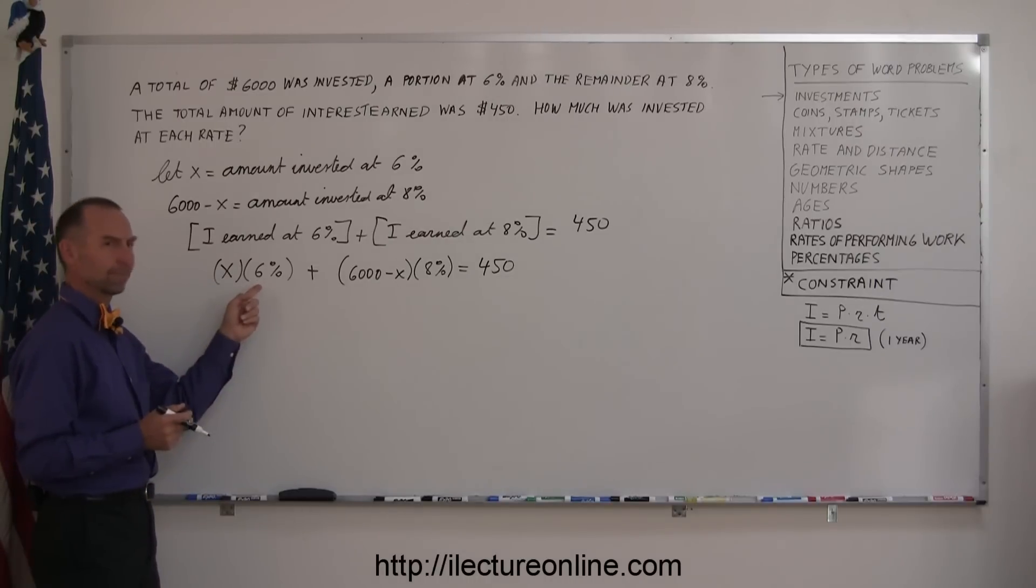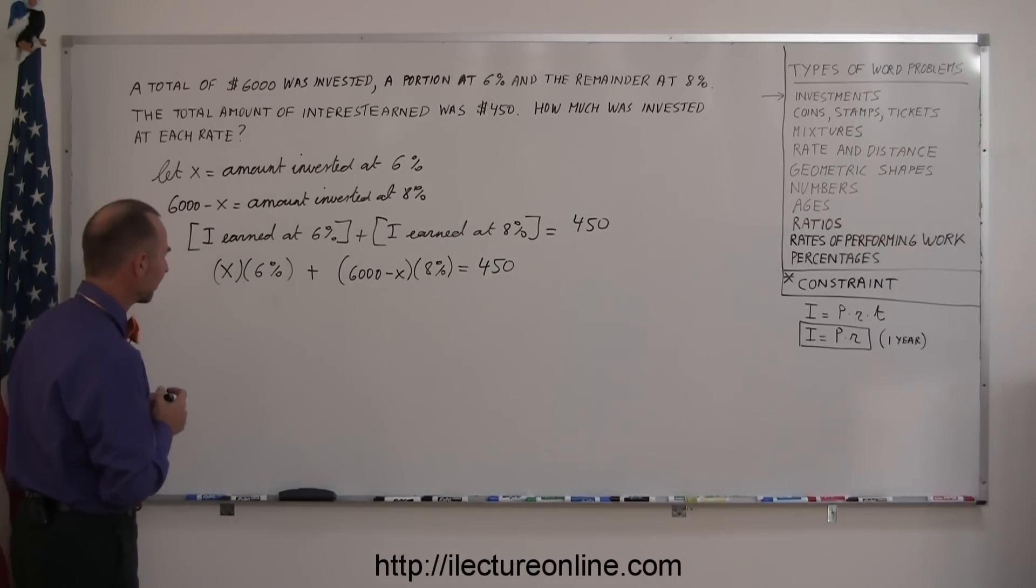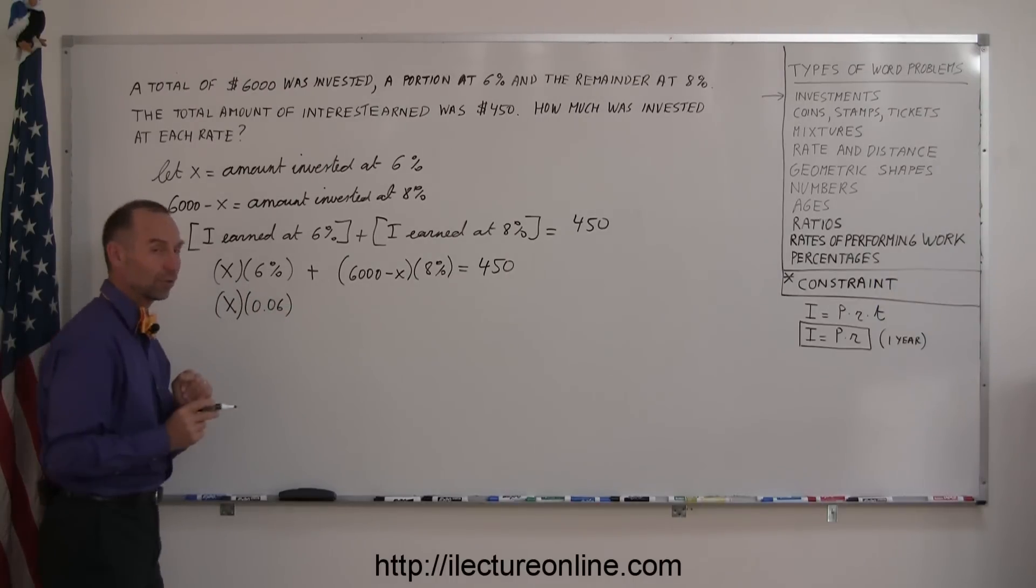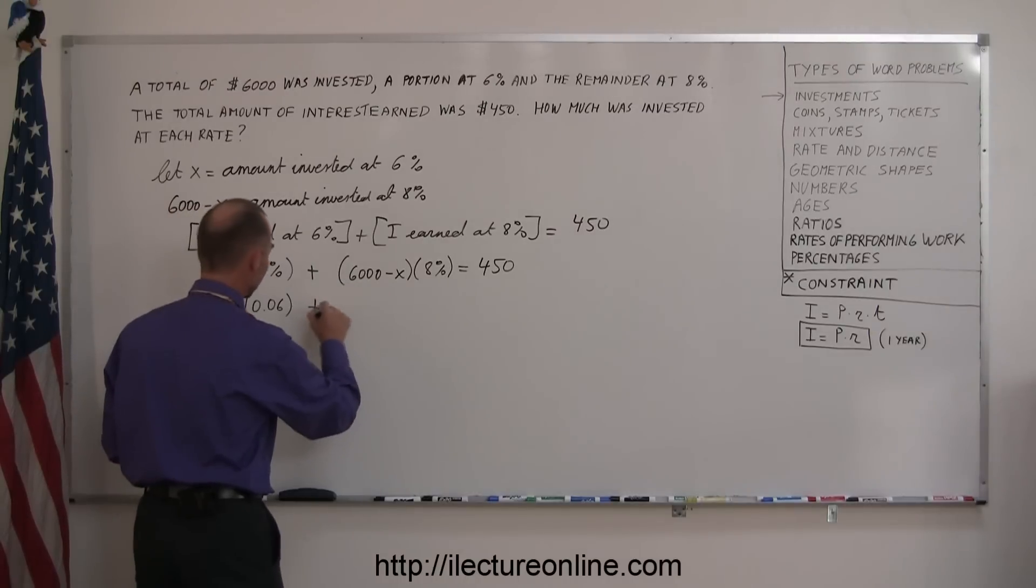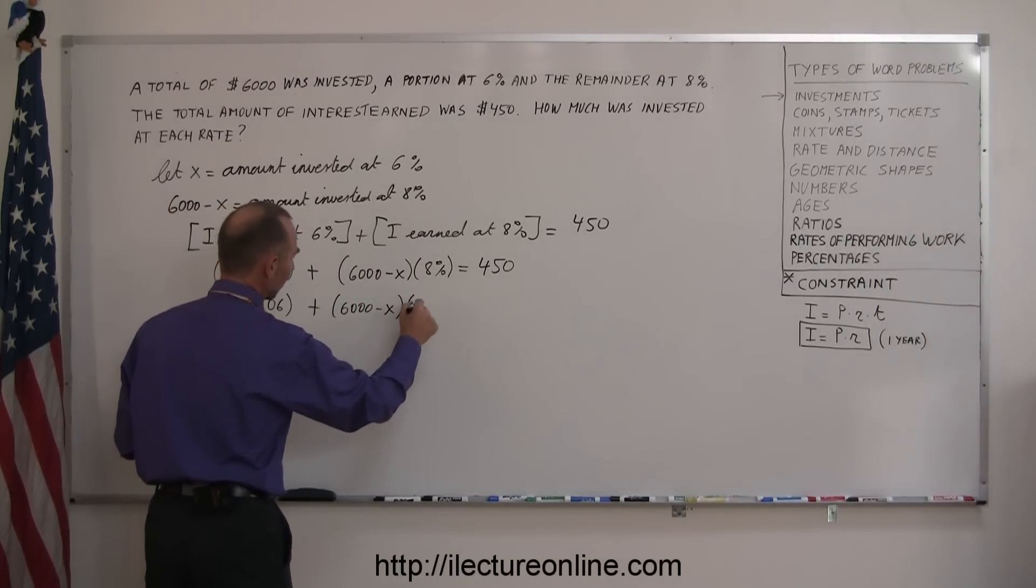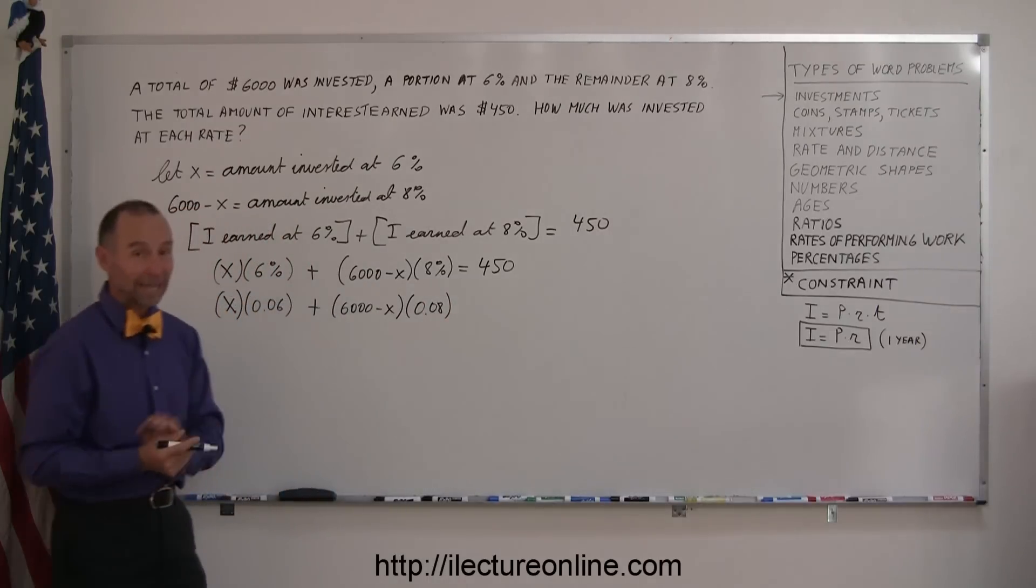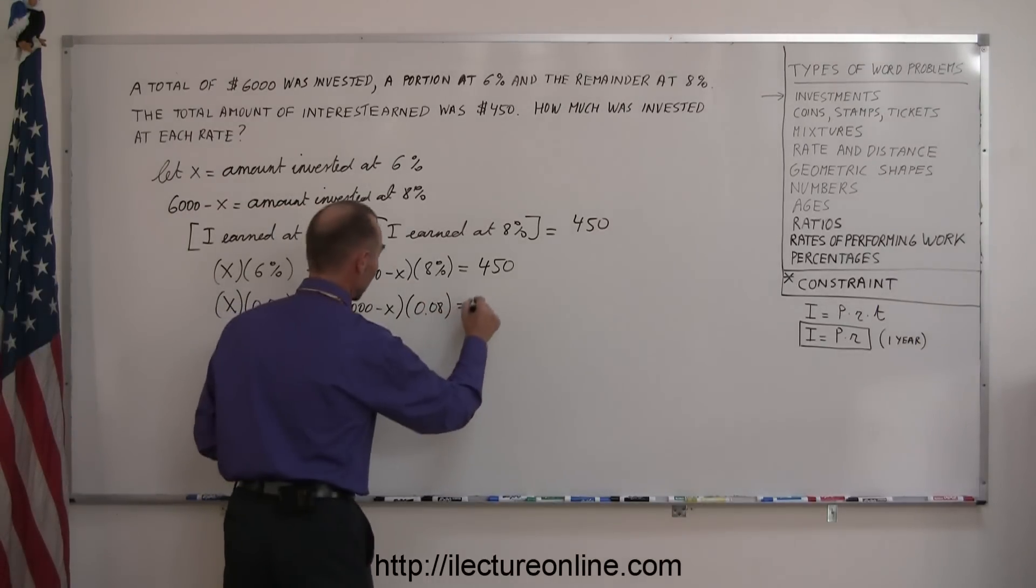First, I'm going to replace the 6% by its decimal equivalent. So, X times 0.06, that's the decimal equivalent of 6%. I do the same over here, 6,000 minus X times 0.08, that's the decimal equivalent of 8%, and that should add up to $450.